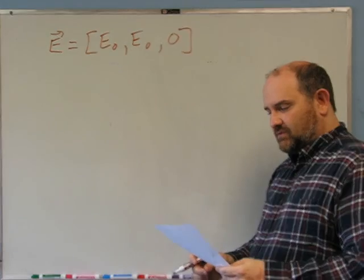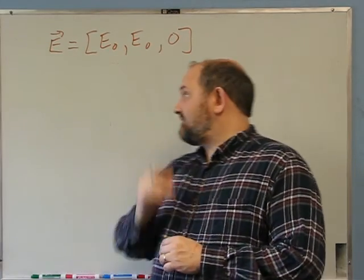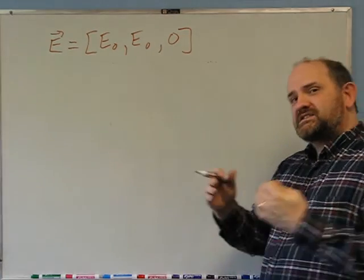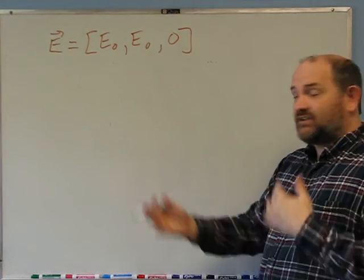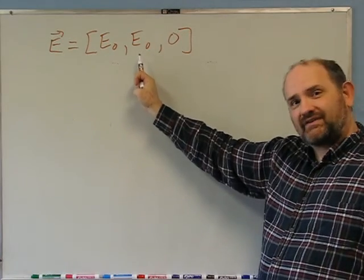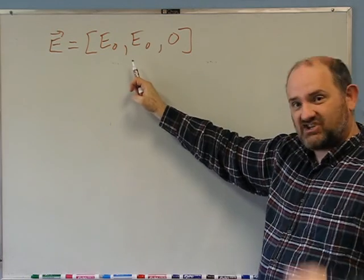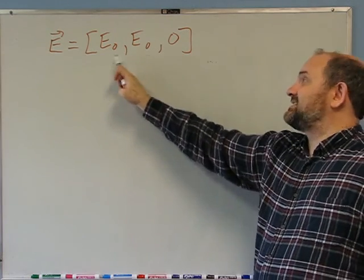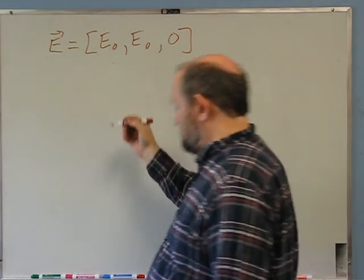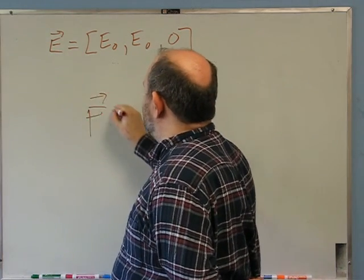What is the magnitude of the force on a particle with charge Q? There is one thing I haven't told you — what is the position of the charge? Because the electric field will be different at different positions, except in this case the electric field everywhere has the same vector value. So you don't actually need the position in this specific case because it's constant everywhere. So wherever the particle is, that's what the electric field is going to be. What is the magnitude of the force on a particle with charge Q?